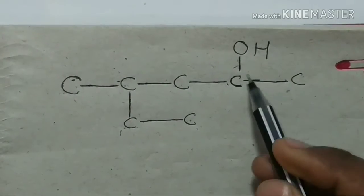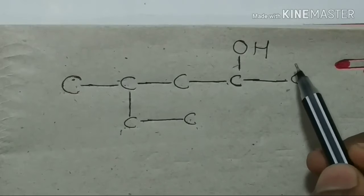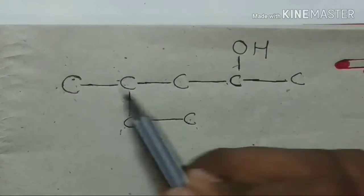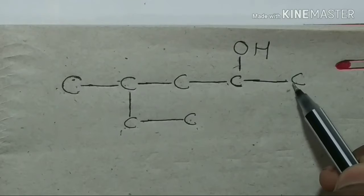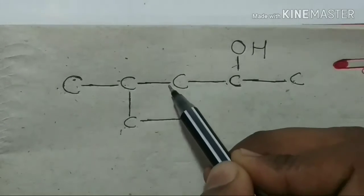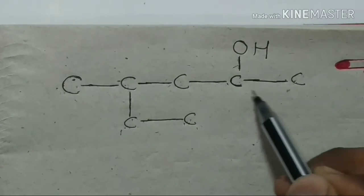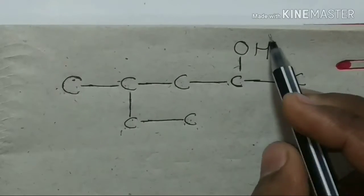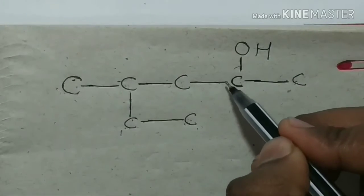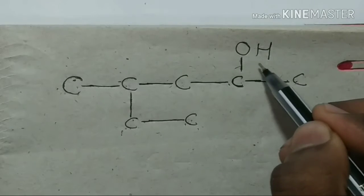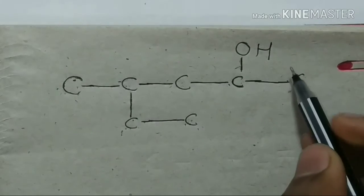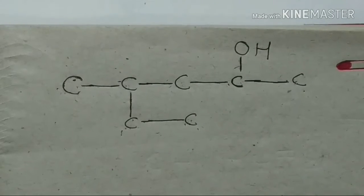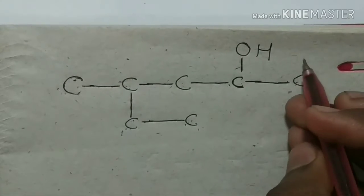Here, you have to get 6 carbons. We need to check: we need to get 5 carbons here. You have to get 6 carbons — but we have to keep this in mind and make sure we get the functional group, so we need to include this carbon.